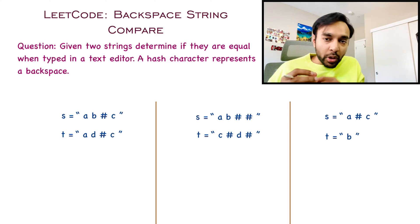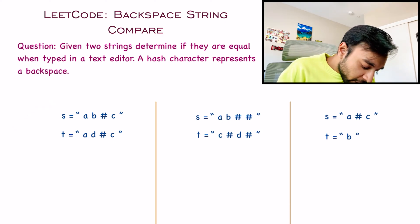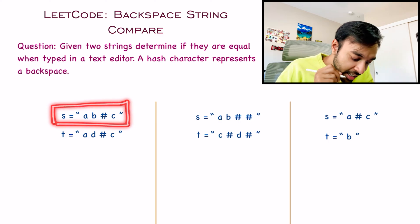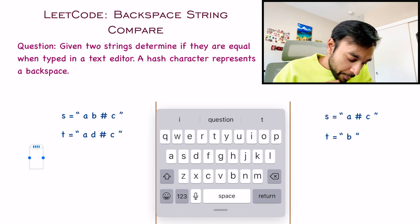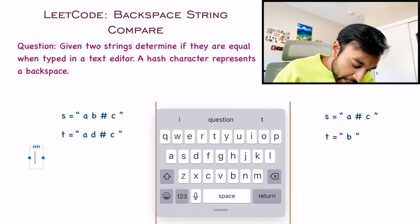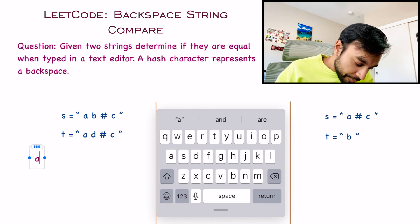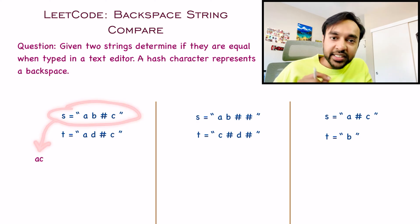The best way to understand it is to look at the given sample test cases. In test case number one, we have two strings that also contain a hash character. When I type the first string into a text editor — I type A, then B, then I have a hash which means a backspace, so I do a backspace and then type C — this string literally translates to AC only.